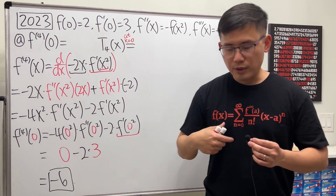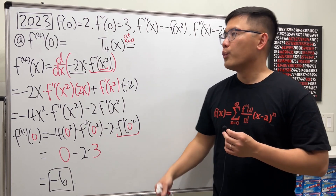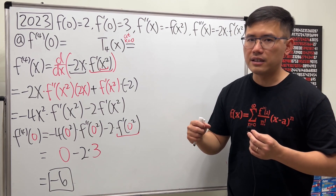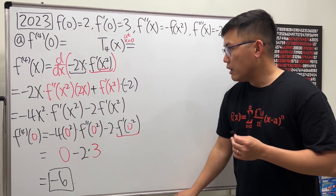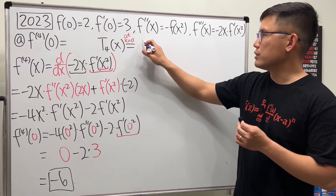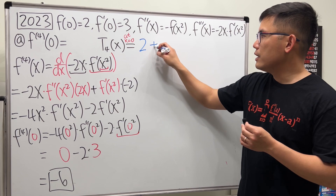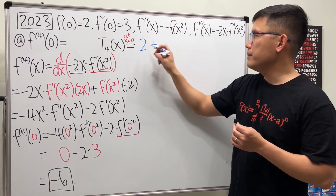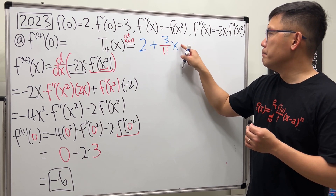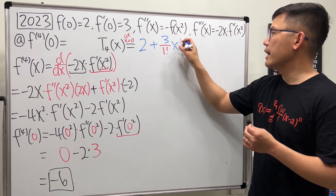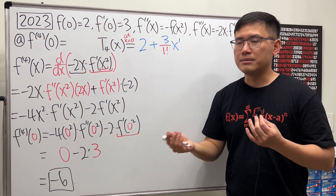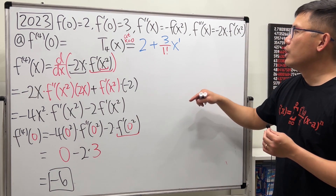Now we need a fourth degree Taylor polynomial. We use the formula: each term is the nth derivative divided by n factorial, times x minus the center raised to the nth power. First we need the value of the function at 0, which is 2. Then we need the first derivative at 0, which is 3, divided by 1 factorial, times x minus 0 — which is just x — to the first power. Here x minus a represents the center.